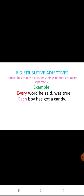Next is distributive adjectives. Distributive adjectives describe a person or thing taken separately, even though we are referring to the whole group. For example, every word he said was true. Every boy has got a candy. The words each, every, either, neither, and nor are used as distributive adjectives.